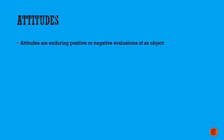Welcome to this presentation about attitudes as predictors of behavior. Let's start with the definition of attitudes. Attitudes are enduring positive or negative evaluations of an object. The word enduring means that they're fairly stable — they can change, but they don't change easily and they don't change quickly. They're fairly stable from day to day, and they involve having an emotional reaction positively or negatively towards something.